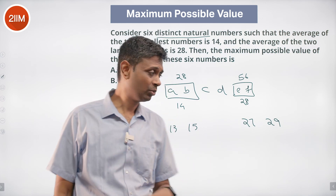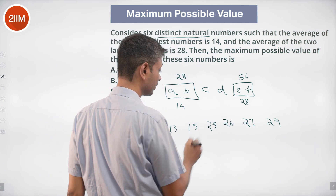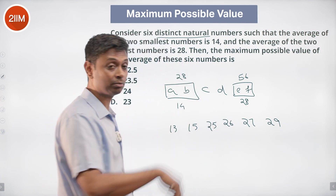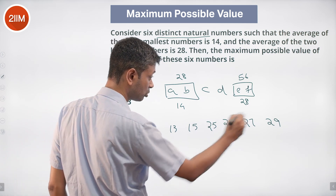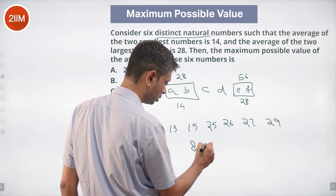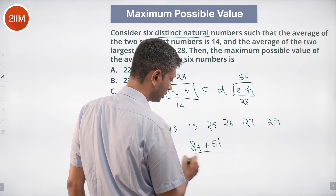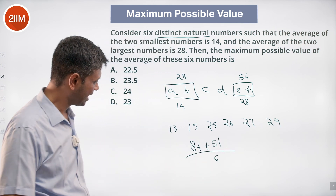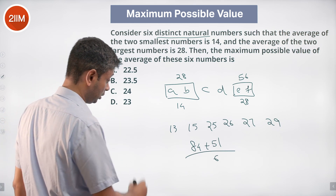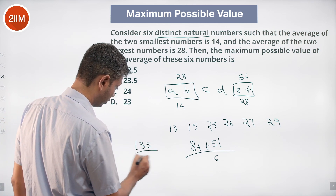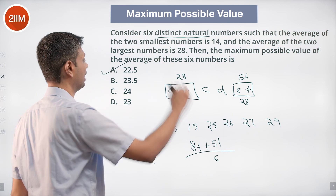There's no condition on c and d, so make them 25 and 26. These two add up to 28, those two add up to 56 — that's 84 — plus 25 plus 26 is 51. Total is 135, divided by 6 gives 22 and a half.